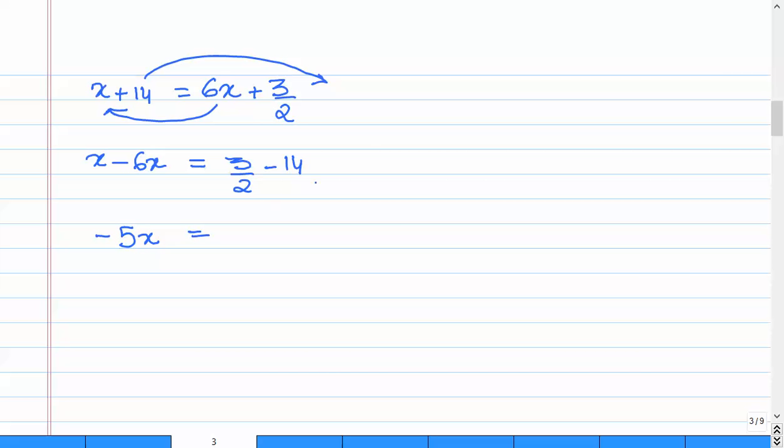Now x minus 6x gives us minus 5x. And this one we solve by taking the LCM, having a common denominator. So the LCM of 2 and 1 is 2. And therefore we have 3 minus, you multiply this 14 by 2 which gives us 28. Now if you look at this, we have minus 5x equals, 3 minus 28 gives us minus 25 by 2.